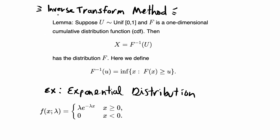I have the lemma for how the inverse transform method works written out here. Basically what it does is it takes U, a random variable that is uniformly distributed, and it takes a CDF of a distribution f that you desire your random variable to have. Using the inverse of the f distribution that you want, you just plug in u to the inverse CDF, and then if you sample from this distribution it will have the desired distribution that you want. If x is a new random variable that you generate and it has the inverse CDF with u plugged into it, that will generate a random variable x with a new distribution which is f.